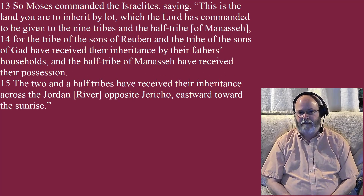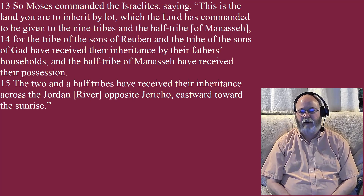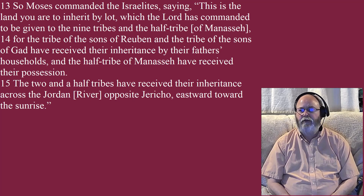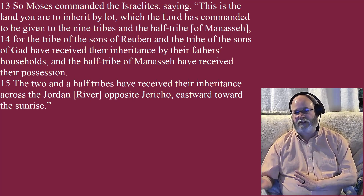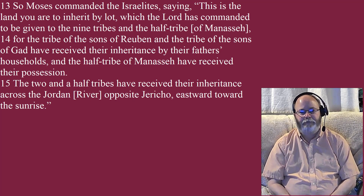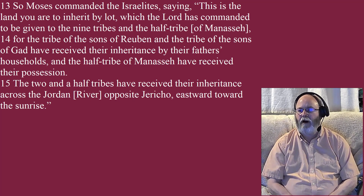So Moses commanded the Israelites, saying, this is the land you are to inherit by lot, which the Lord has commanded to be given to the nine tribes and the half-tribe of Manasseh. For the tribe of the sons of Reuben and the tribe of the sons of Gad have received their inheritance by their father's households, and the half-tribe of Manasseh have received their possession. Some of the tribe of Manasseh also wanted to stay on the east, and then some did not. The two and a half tribes have received their inheritance across the Jordan River, opposite Jericho, eastward toward the sunrise.